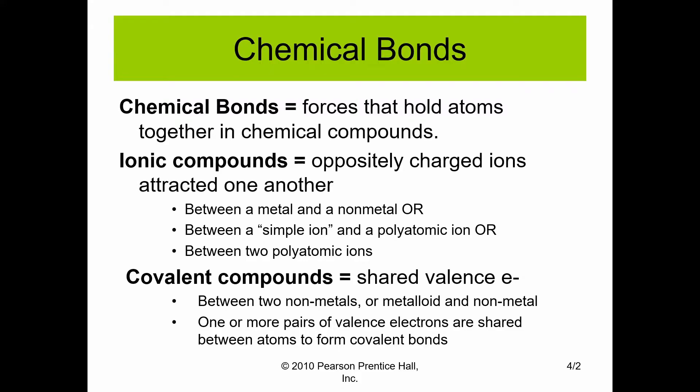In a covalent bond, we're actually going to share the valence electrons between the different compounds. A covalent bond is generally going to occur between two nonmetals or a metalloid and a nonmetal. In this bond, we have one or more pairs of valence electrons that are shared between each atom to form a covalent bond. In an ionic bond, electrons are passed from one atom to another, whereas in a covalent bond, we're sharing the electrons between two atoms.